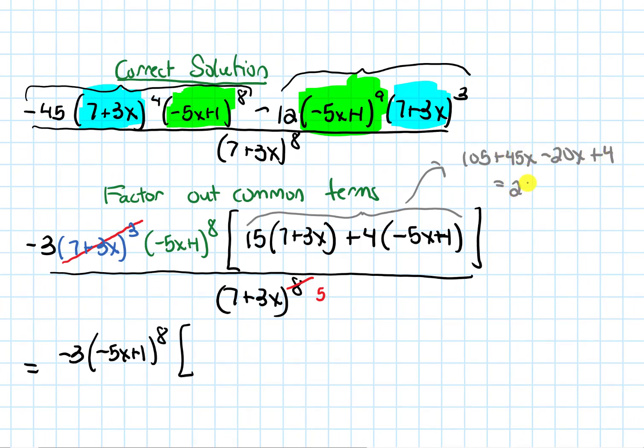Combining like terms, 45x - 20x, that is 25x. 105 + 4 is 109. So in the bracket, we get 25x + 109. And in the denominator, we have (7+3x)^5. And that is our answer.